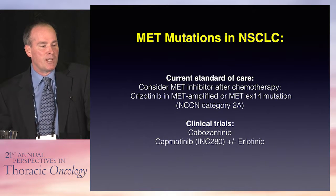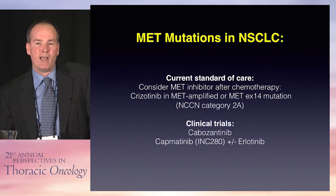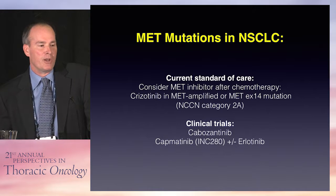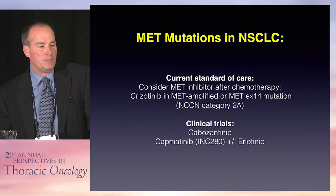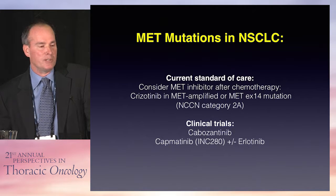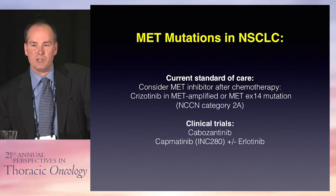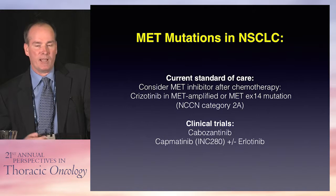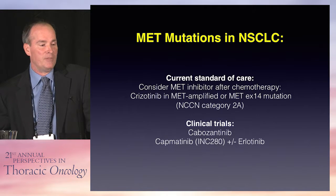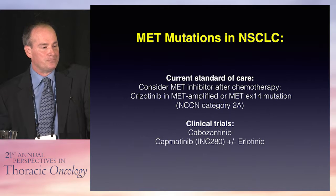For patients who have had progression on chemotherapy with MET amplification or a MET exon 14 mutation, I would consider crizotinib, listed as a Category 2A recommendation by NCCN. Other clinical trials are looking at cabozantinib and other investigational agents as well.